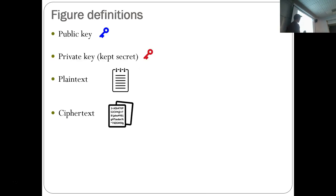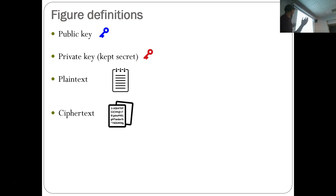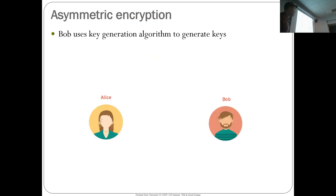Here are some figure definitions for the subsequent slides. The blue key is your public key. The red one is the associated private key — this is the thing you keep secret. The small figure represents plaintext and the garbled stuff is ciphertext. Now, how do you use asymmetric encryption?